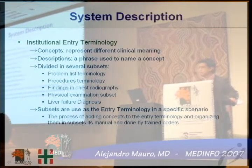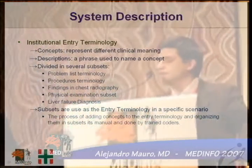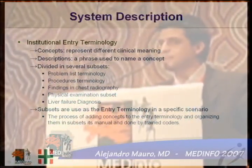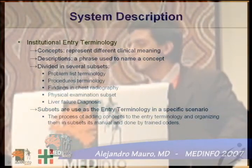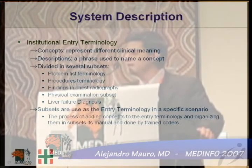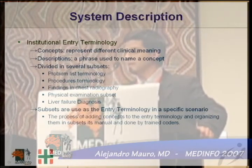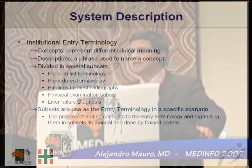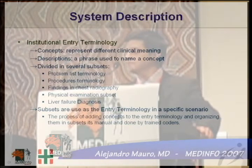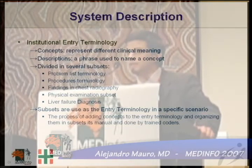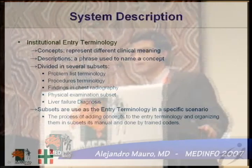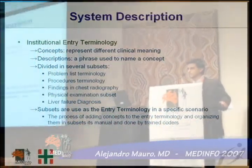We also divided this institutional entry terminology into several subsets like problem list terminology, procedures terminology, findings in terms of radiography, physical examinations, and many others. Subsets are used as the entry terminology in a specific scenario. The process of adding concepts to the entry terminology and organizing them in subsets is manually done by trained coders and is only done once, regardless of how many subsets the concept is used in.